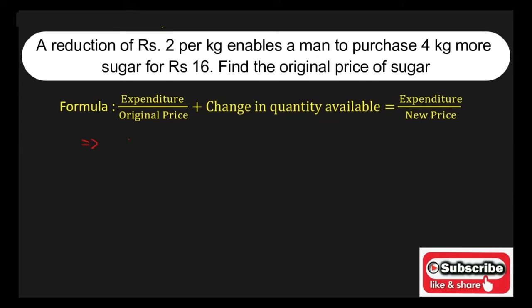First, we have to consider the original price is equal to X rupees. In the question, it is given a reduction of Rs.2 per kg. That is nothing but the new price of the sugar is equal to original price, that is X, minus the price of reduction, that is Rs.2.